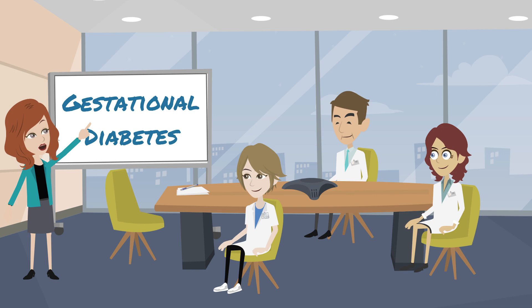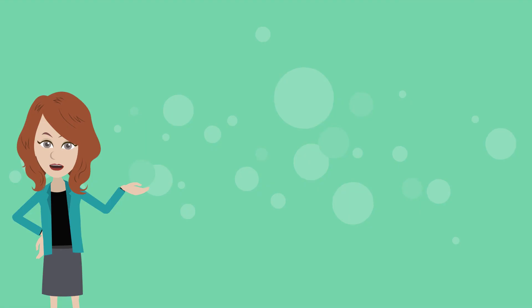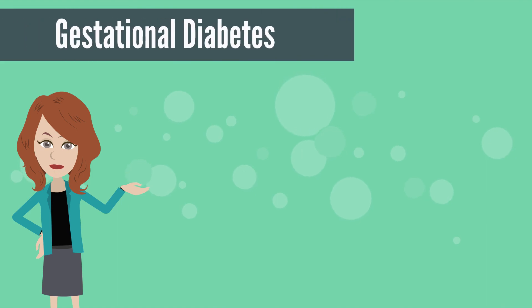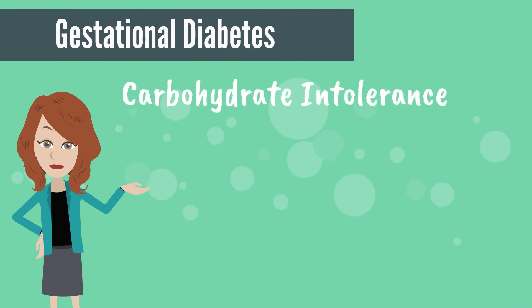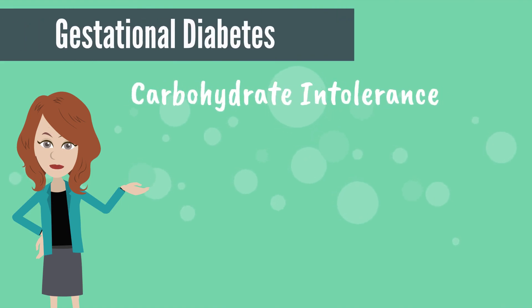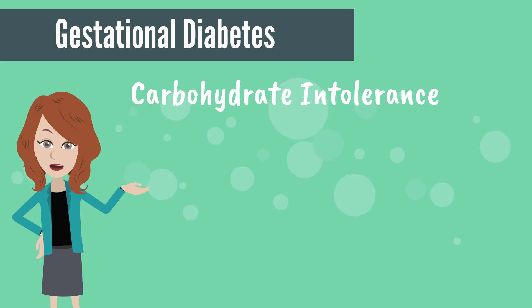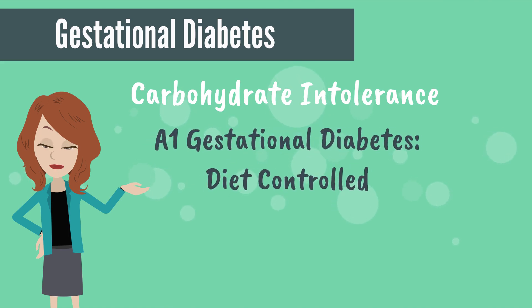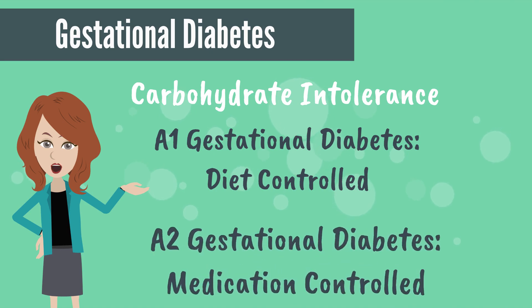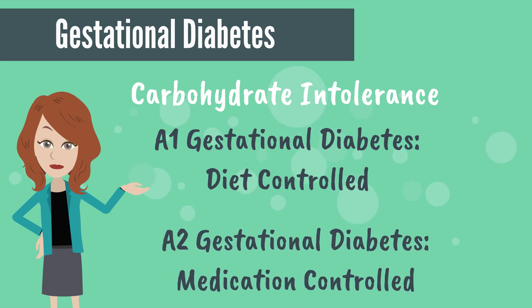My end of rotation presentation is on gestational diabetes. Gestational diabetes is defined as carbohydrate intolerance that starts with the onset of pregnancy. There are two types: A1 is diet controlled, and A2 requires medications to control maternal blood glucose levels.